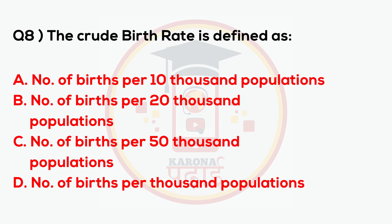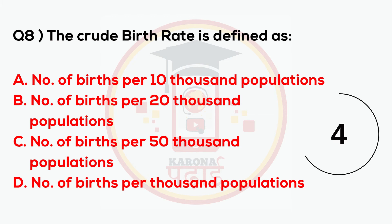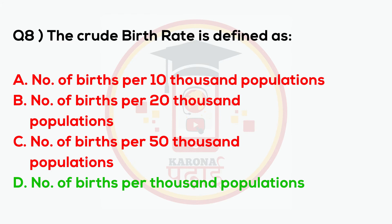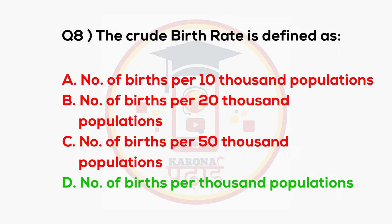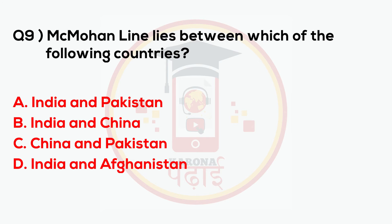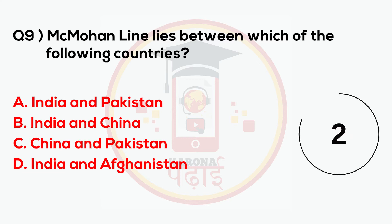The crude birth rate is defined as the number of births per 1000 population. The McMahon Line lies between India and China.